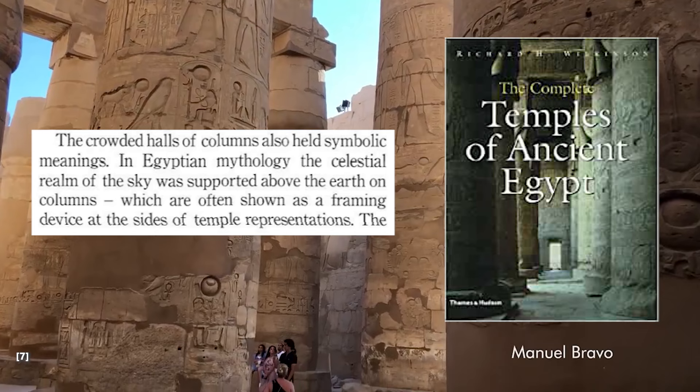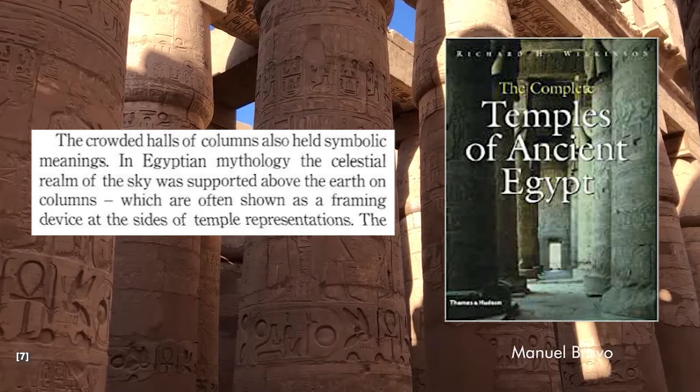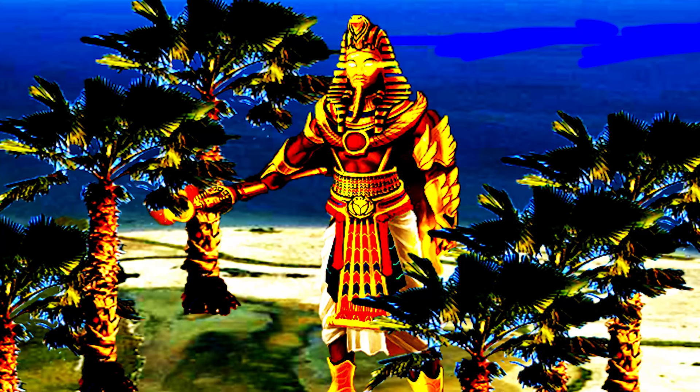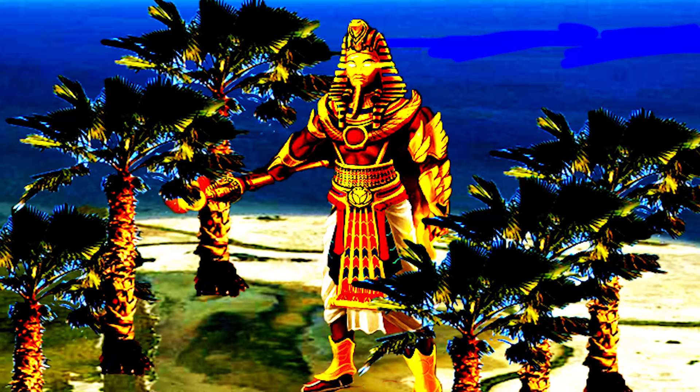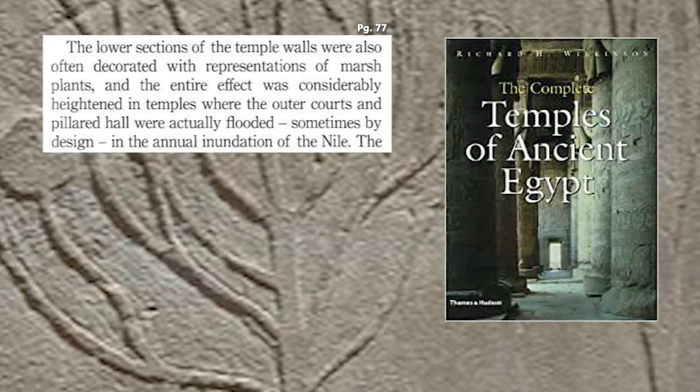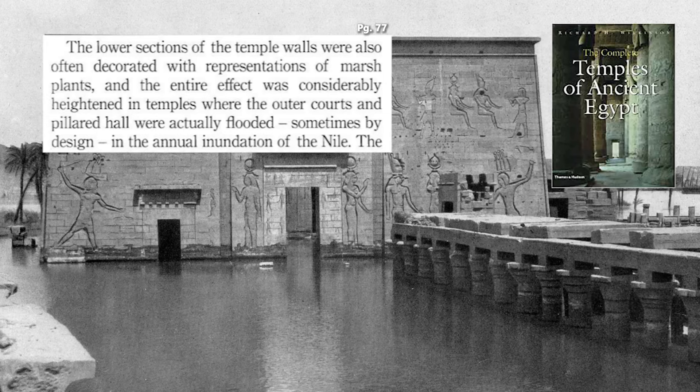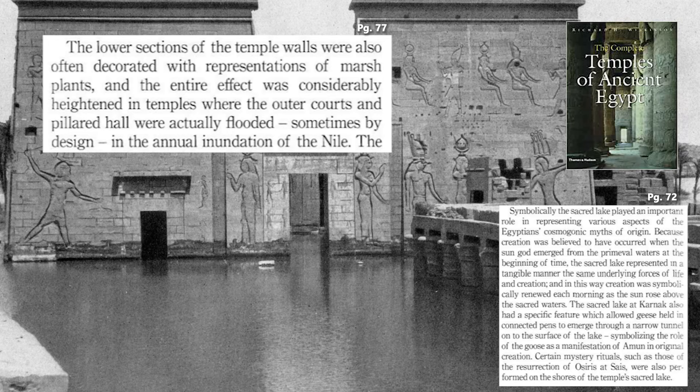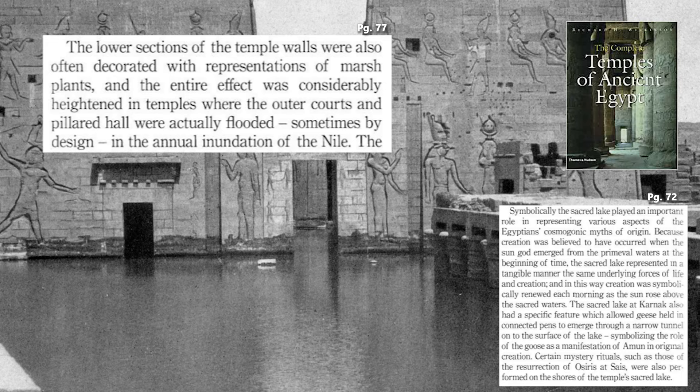To start how the Egyptians mirrored the cosmos with their temples: first of all, they had many columns. The crowded halls of columns held symbolic meanings — in Egyptian mythology, the celestial realm of the sky was supported above the earth on columns, shown as a framing device on the sides of temple representations. These columns were mirrored off what they saw as the original creation of the world, where the primordial mound was a marshy environment. Their marsh plant environment was a big focus. The lower sections of the temple walls were often decorated with representations of marsh plants, and the entire effect was considerably heightened in temples where the outer courts and pillared halls were actually flooded — sometimes by design — in the annual inundation of the Nile.